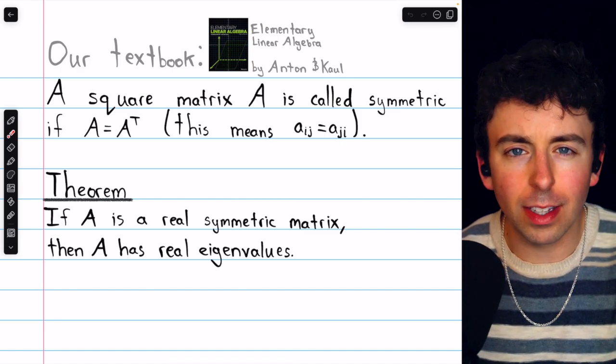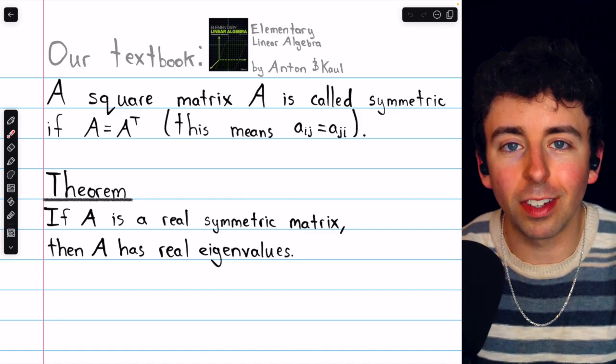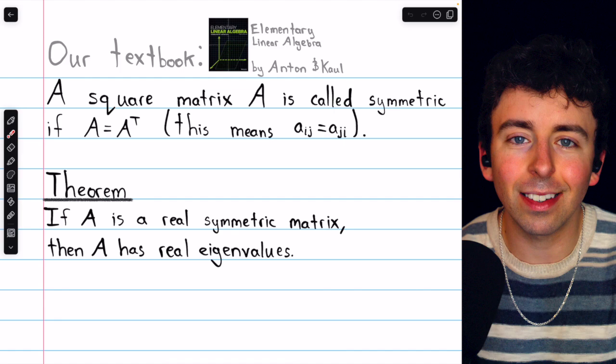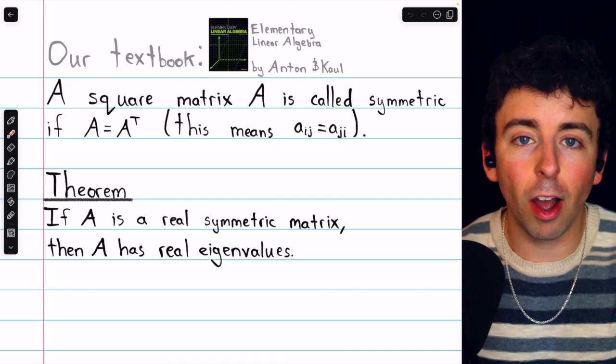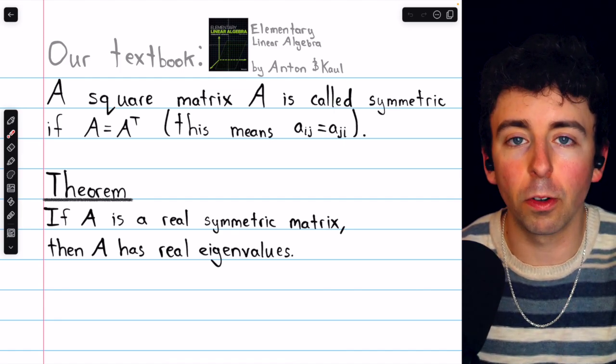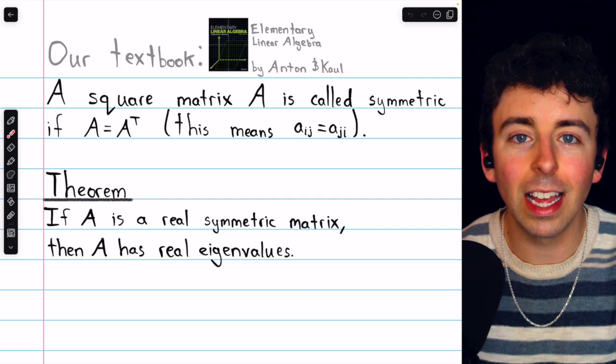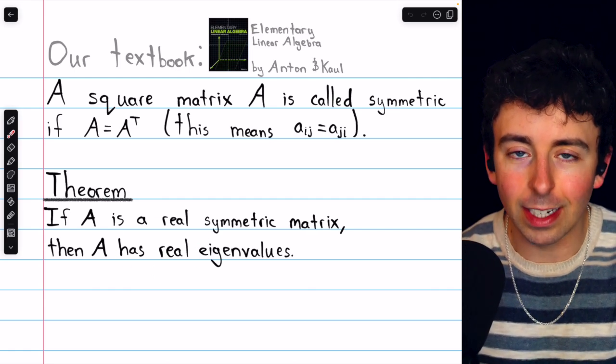At this point, we've seen several examples of real matrices that still have complex eigenvalues, but this complication is never encountered by real symmetric matrices. Their eigenvalues are guaranteed to be real.